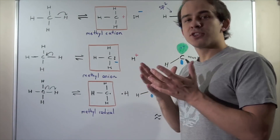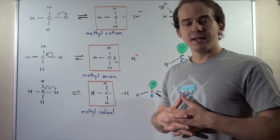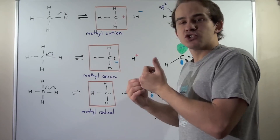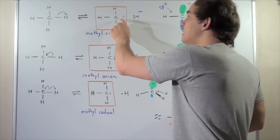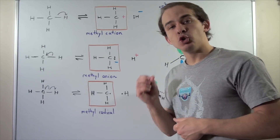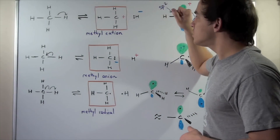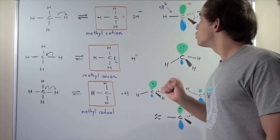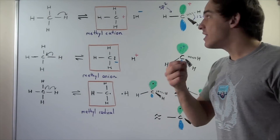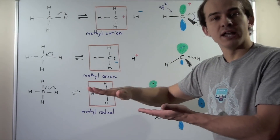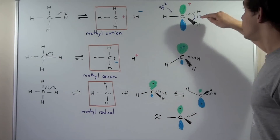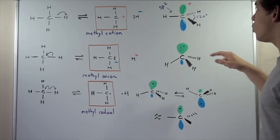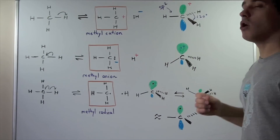Now let's examine the three-dimensional shapes of these reactive intermediates and compare and contrast them. Going back to the methyl cation — this carbon has an empty 2P orbital, and because of that it will act as a Lewis acid. Notice it has three identical CH bonds, meaning this carbon will be SP2 hybridized. All these bonds will lie on the same plane — the XY plane — and the angle between each adjacent CH bond will be 120 degrees.